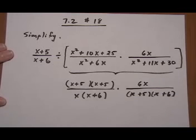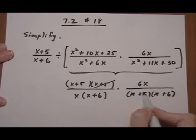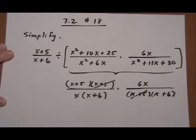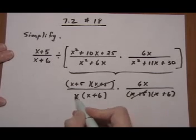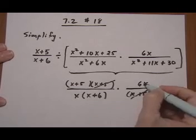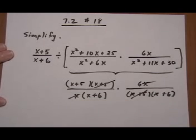Now that we've factored, we cancel — x plus 5 top and bottom. x plus 6 are both on the bottom, so we can't cancel them. x and x are gone.